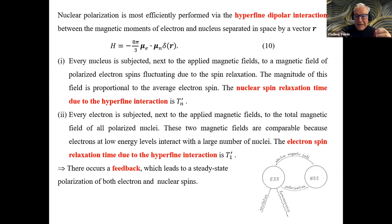But then the key physical factor enters the play. There is an interaction between electronic spins and nuclear spins, and it is called hyperfine dipole interaction. In fact, this is a very fundamental problem for solid-state physics, but in some approximations, this hyperfine dipole interaction is taken just as a scalar product of these two magnetic moments, and it's local in real time. Every nucleus is subjected next to the applied magnetic fields to a magnetic field of polarized electron spins, fluctuating due to the spin relaxation. Due to this effect, the nuclear spin relaxation acquires some hyperfine interaction driven relaxation with its typical time.